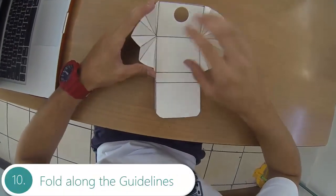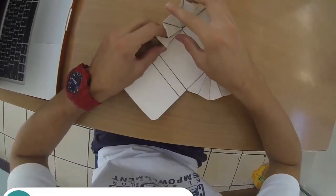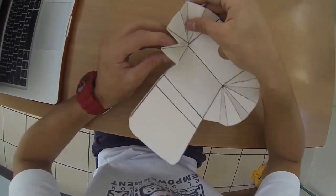Once you've cut off the figure, you want to fold along the guidelines. This will help so your wallet can open and close properly.